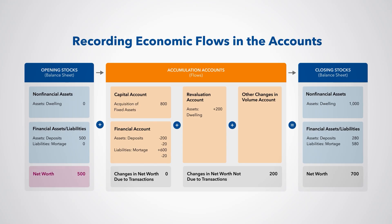The net worth in the opening balance sheet is $500, reflecting John's $500 in deposits and $0 in liabilities, since he has not yet incurred a loan liability. During the period, the acquisition of the dwelling is recorded in the capital account. The corresponding mortgage financing of $600, the down payment of $200, and extra payment of $20 are recorded in the financial account. The increase in real estate prices by 25% led to holding gains of $200. This is recorded in the revaluation of assets account.